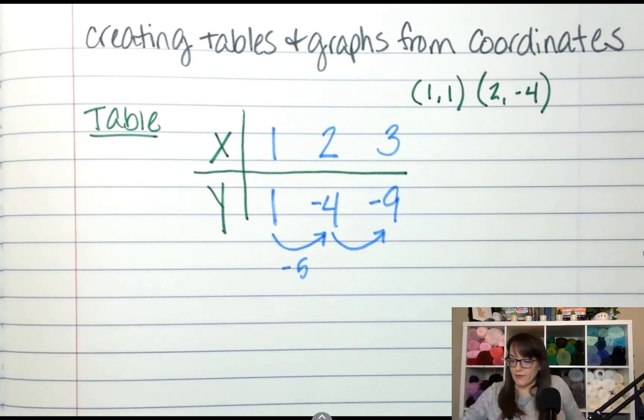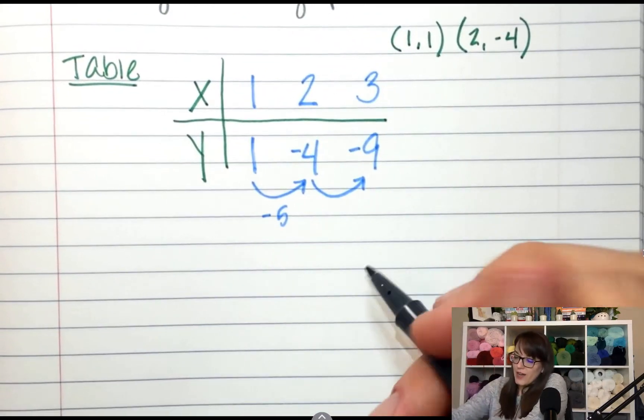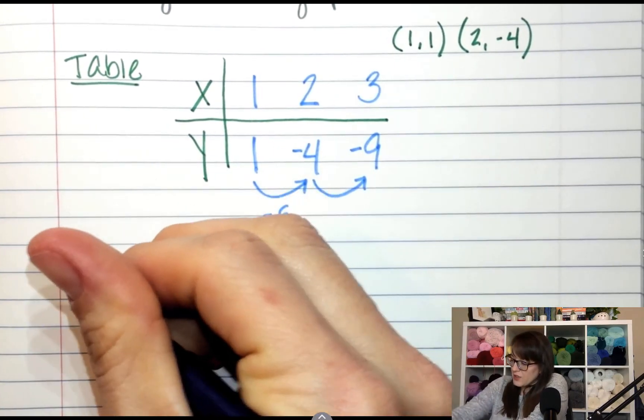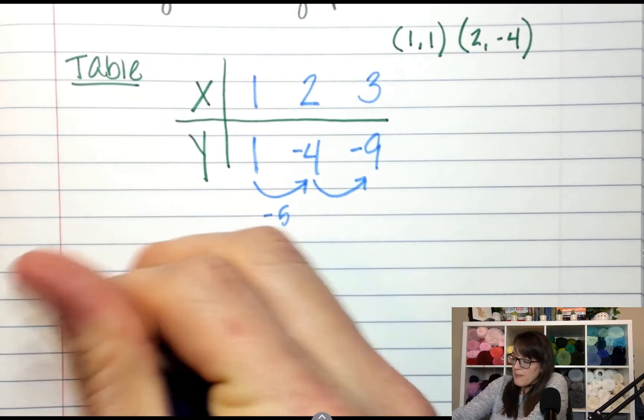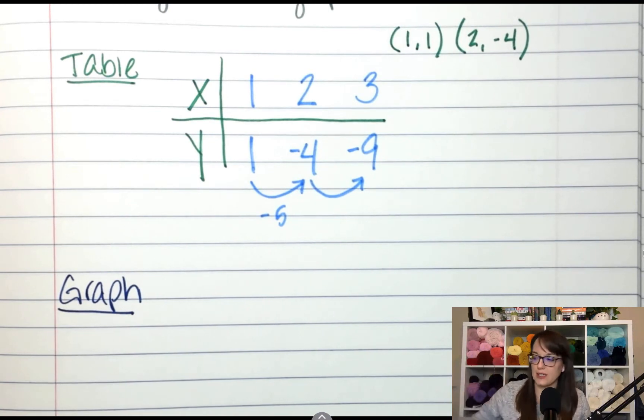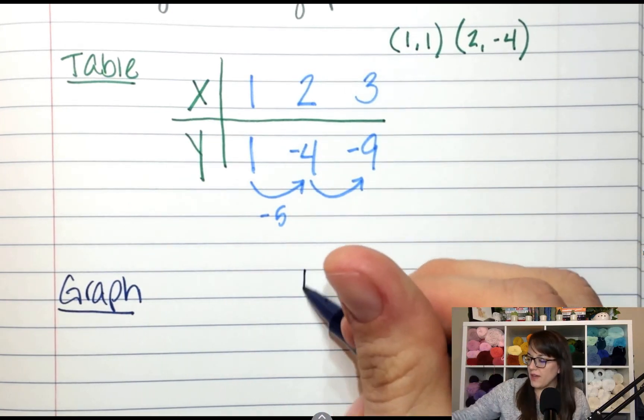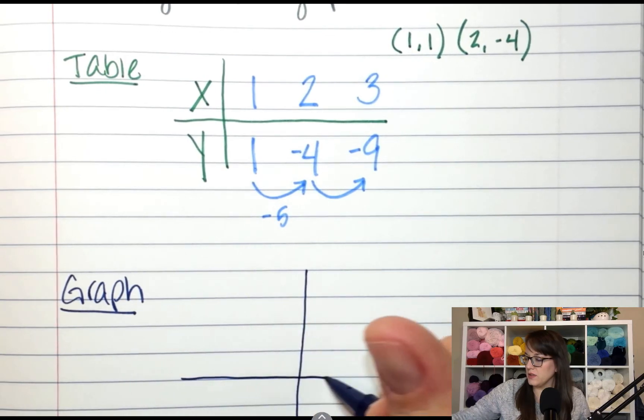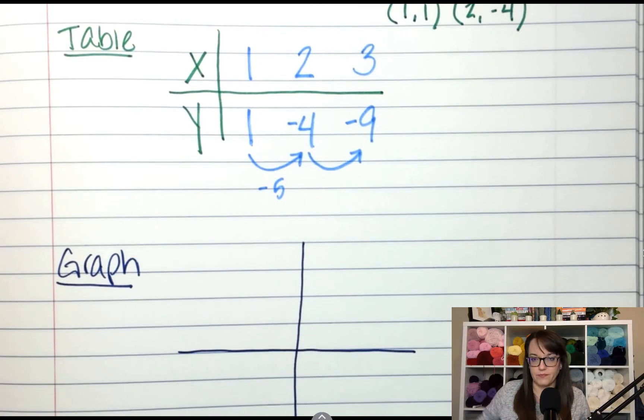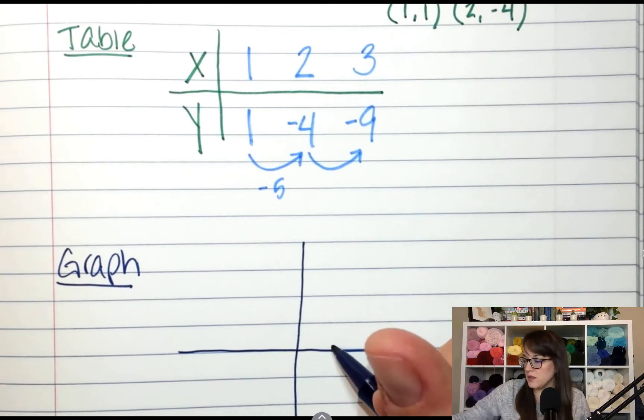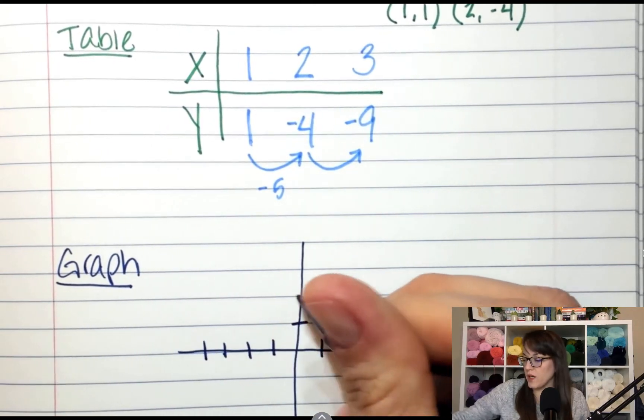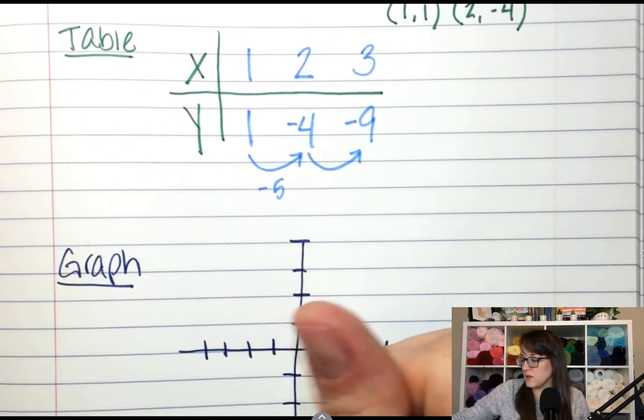All right, so now let's make a graph. Again, your graphs do not have to be pretty. Mine usually aren't great. So if I wanted to graph to make a line, all you need are two dots. You just need two coordinates and then you connect them. So if I've got a graph, I need to graph the point (1, 1). I'm just going to put 4 on each side. 1, 2, 3, 4.